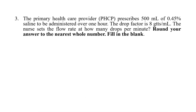Heading towards the next question: the primary healthcare provider prescribes 500 ml of 0.45% saline to be administered over one hour. The drop factor is 8 gtts per ml. The nurse sets the flow rate at how many drops per minute? Round your answer to the nearest whole number. In this question, you need to find drops per minute.